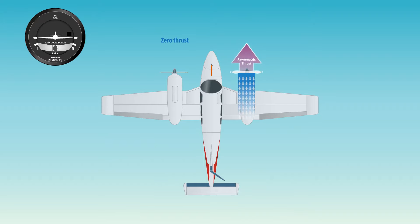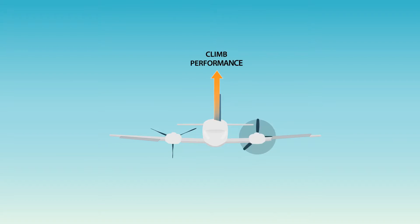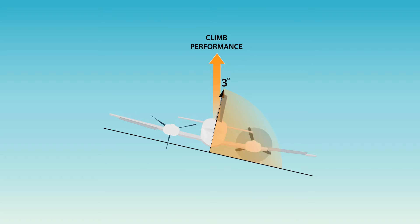With an engine set to zero thrust and the airplane slowed to VYSE, a climb with maximum power on the remaining engine will show the precise bank angle and ball deflection required for zero sideslip and best climb performance.